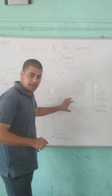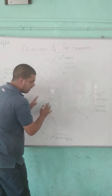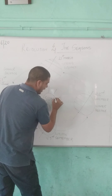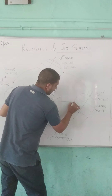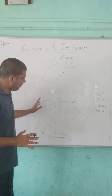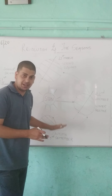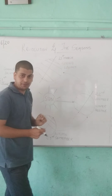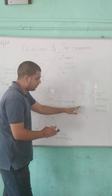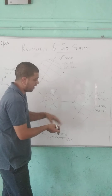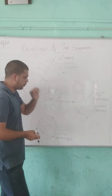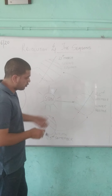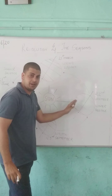Observe carefully in your book and look here. During 22nd December, the sun rays fall directly on the Tropic of Capricorn. Since the Tropic of Capricorn is in the Southern Hemisphere, we in the Northern Hemisphere do not receive direct rays from the sun. This is why we experience winter in December — because the sun rays are directly falling on the Tropic of Capricorn in the Southern Hemisphere.